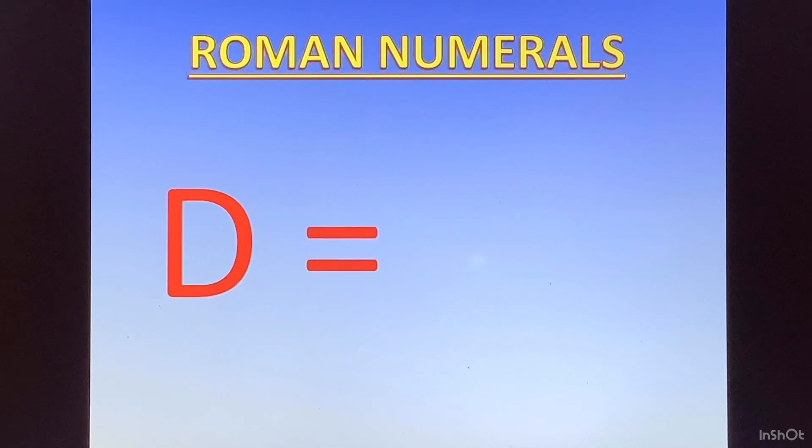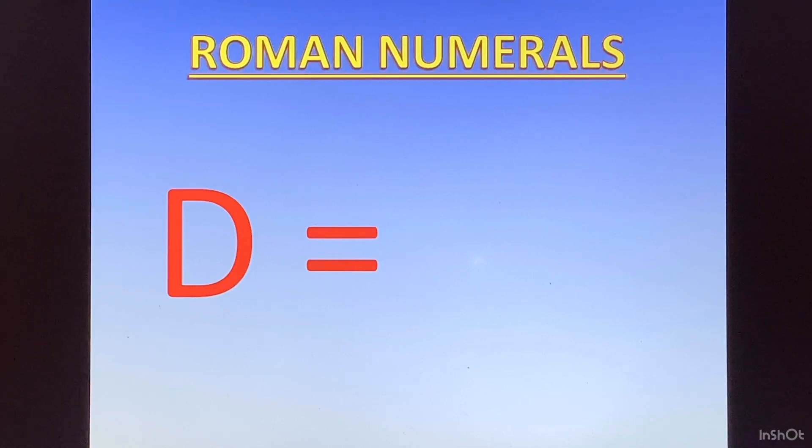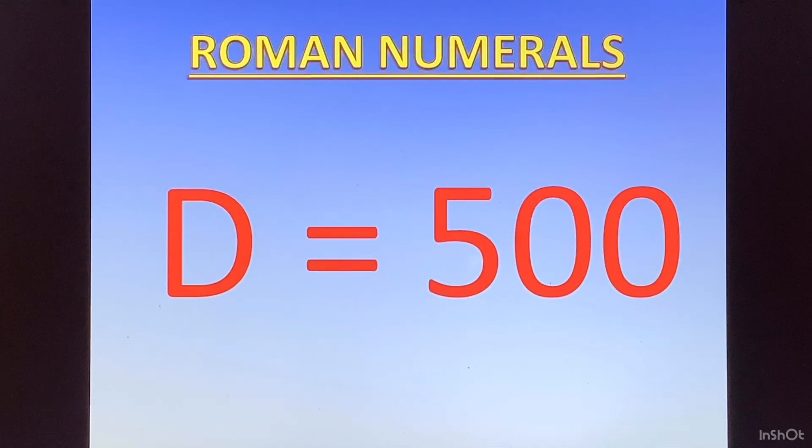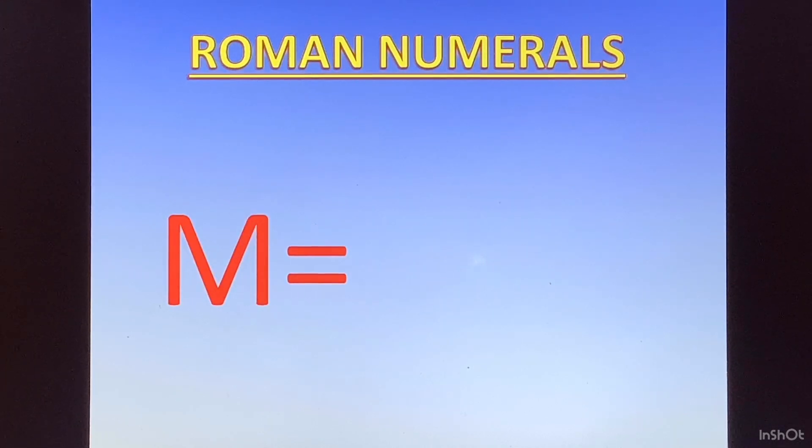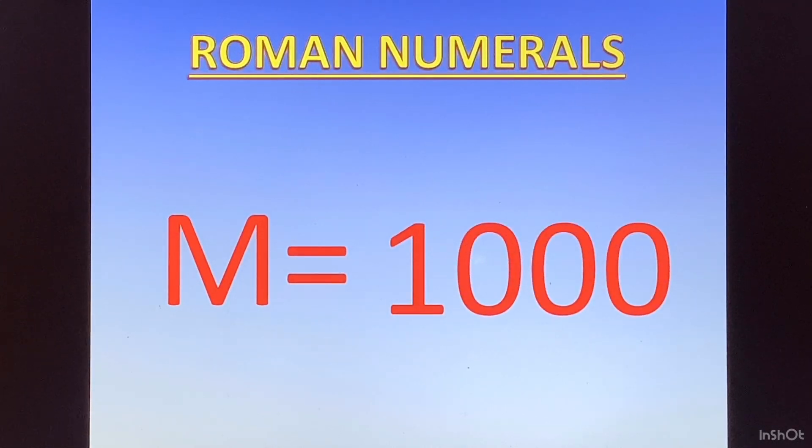Then D. D is 500. I don't have a trick for this. You'll have to learn this. And M. M stands for one thousand. Millennium means one thousand, and if you know a little bit of French, mille means thousand in French. So M is one thousand.